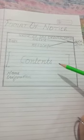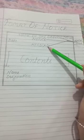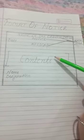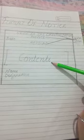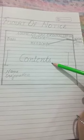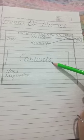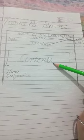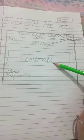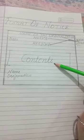After writing the heading, we have to leave one line and write the contents. The content can take many lines as required, or a maximum of up to 50 words. The content should always include the details necessary for the notice.